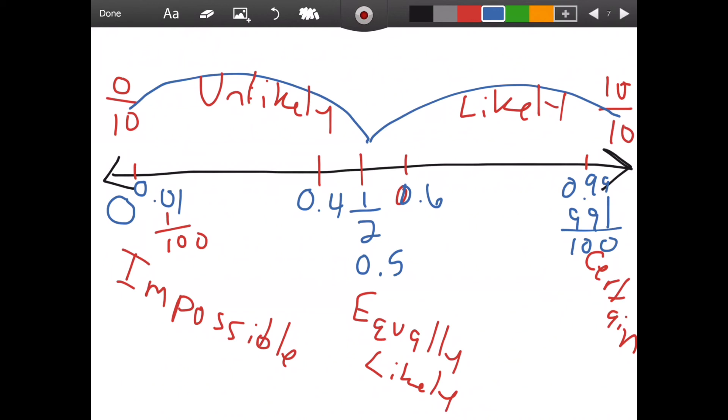When we're thinking of probability, we want to think of this number line so that we can think how unlikely is something to happen, how likely is something to happen.